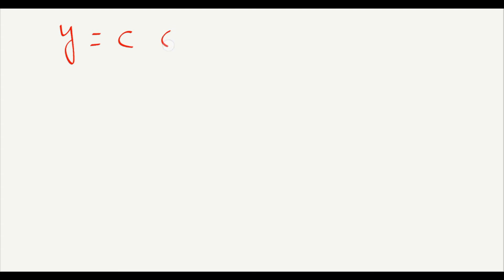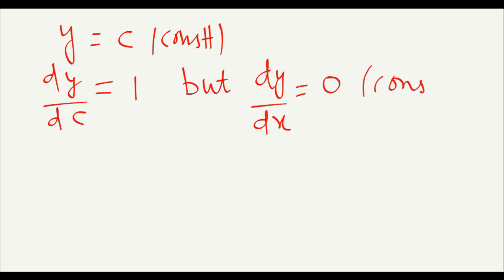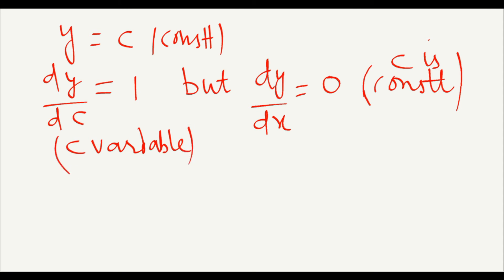For example, y equals c where c is constant. Then differentiation of y with respect to c is one — but differentiation of y with respect to another variable, when c is constant, is zero. Why? Because c is constant. So: if c is a variable, dy by dc equals one. But dy by dx is zero because c is constant and x is any other variable.